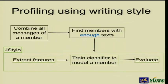This is how we profile users in our forums. First, we combine all the messages that a user posts in the forum, then we find members with enough text. After that, we use J-Stylo to extract linguistic features, then train the classifier to model a member, and finally evaluate our approach to see how well we are doing.